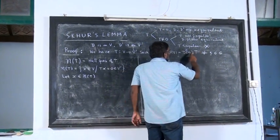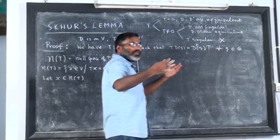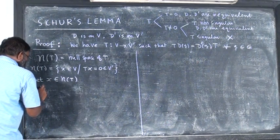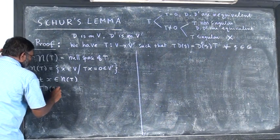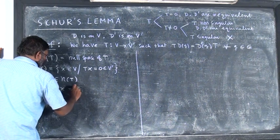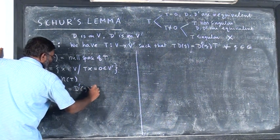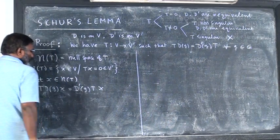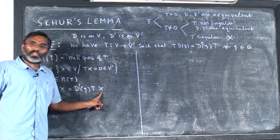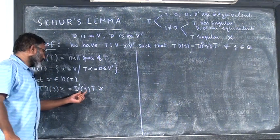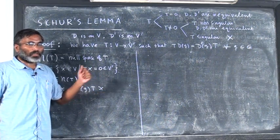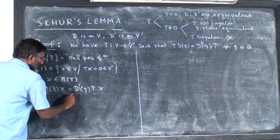This will take us to V prime, so we ask: what is the vector in V prime that we get? Using the intertwining relation, T(D_g(x)) equals D prime_g(T(x)). Now T(x) equals 0 since x is in the null space, and a representation acting on the zero vector gives 0, so this is equal to 0.